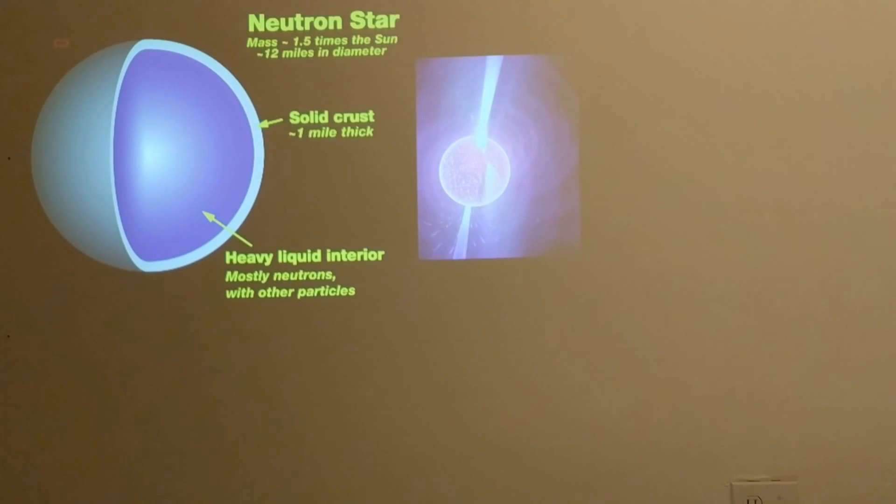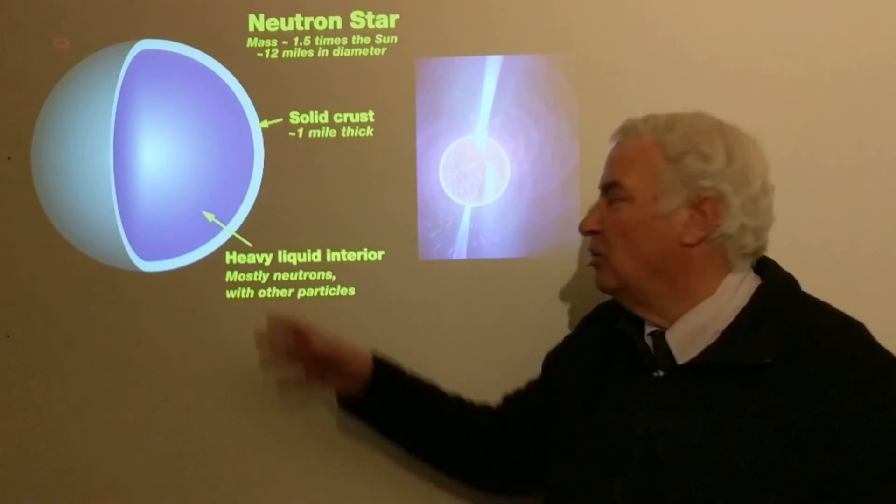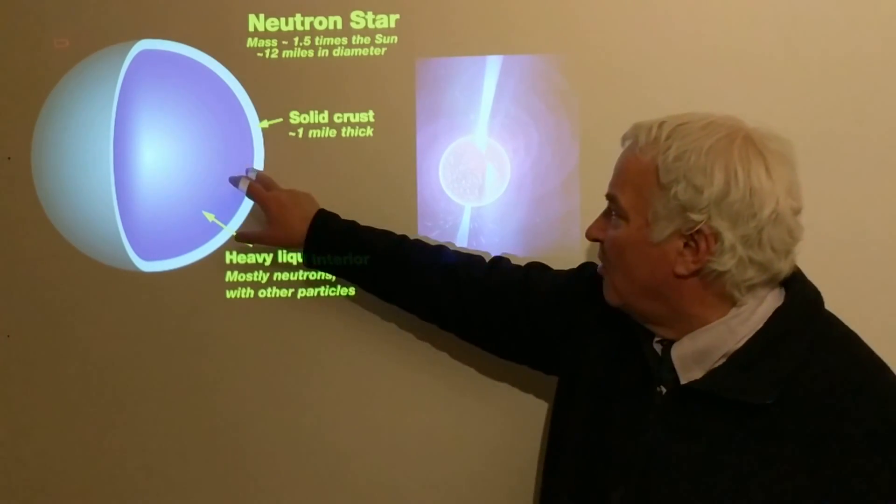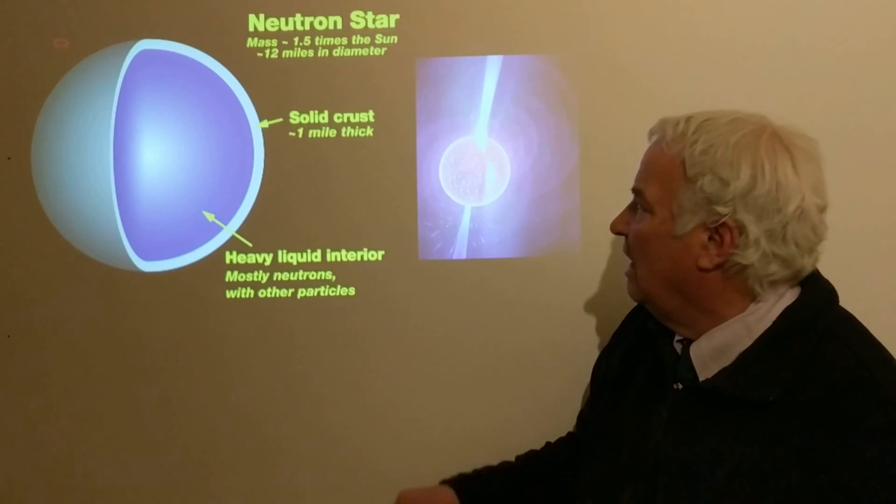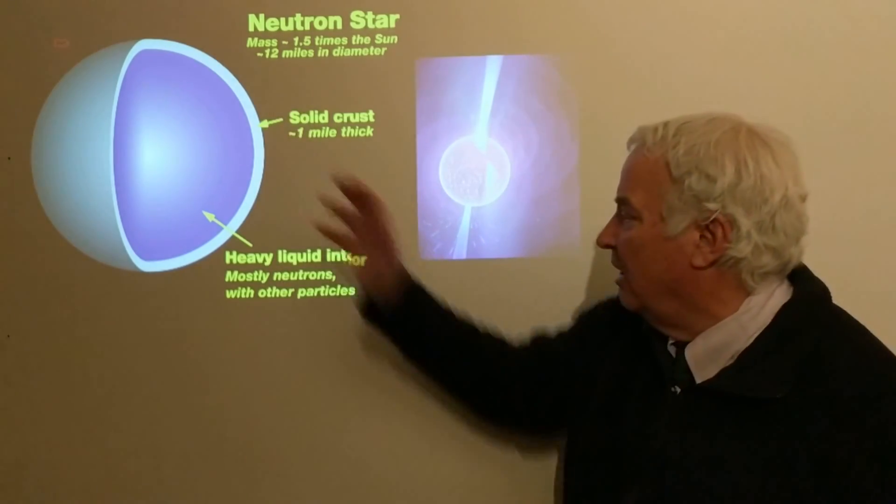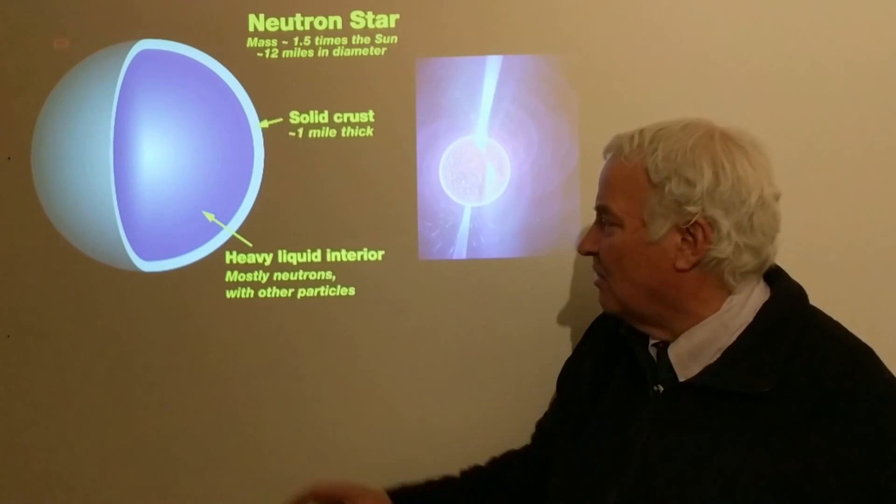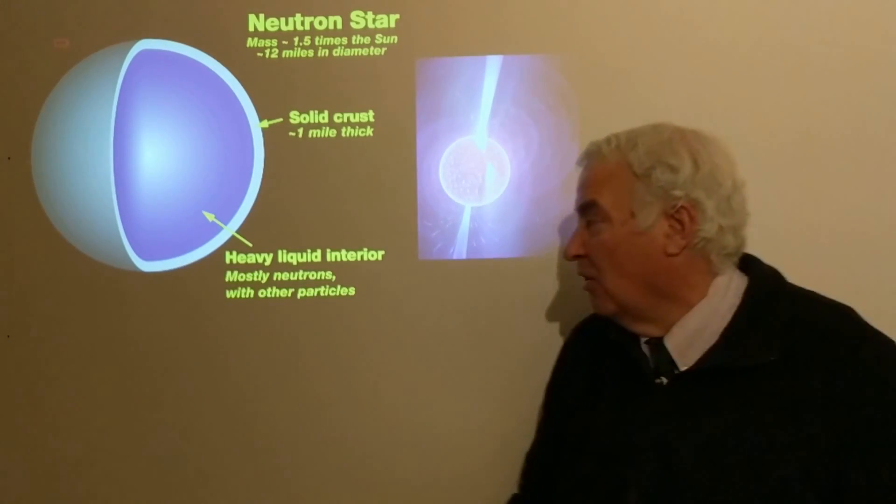Here's a diagram showing a neutron star. It's about 12 miles in diameter, the mass is about one and a half times the mass of the Sun. It's got a liquid interior with mostly neutrons with some other particles. So what is a neutron star made of? Mostly neutrons—that's pretty simple. It's got a thin crust about a mile thick. The gravity at the surface is extraordinarily high, enormously high. It's possible to escape a neutron star, but it is very difficult. You would have to be moving at a substantial fraction of the speed of light.